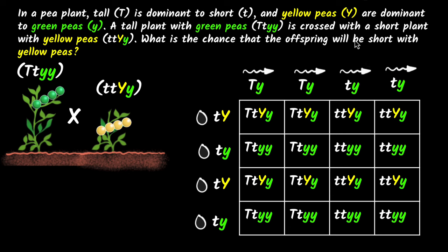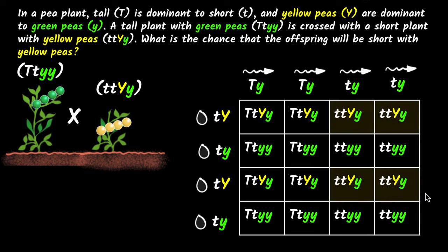What is the chance that the offspring will be short with yellow peas? Short means you need both small t's, and yellow means you should have at least one capital Y, because that's dominant. So let's look for it. We need both small t's — so it's not here, not here, but we have these here. In those, we need at least one capital Y for yellow. We have one capital Y here, one capital Y here — so these two will work. So these four are the ones that will give me short with yellow peas.